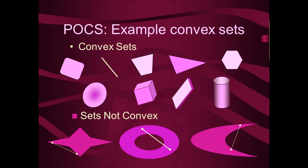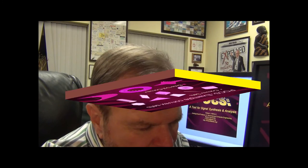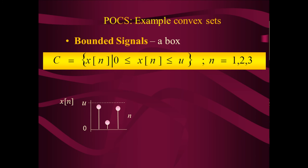Let's look at signals and how they might be interpreted as elements of a convex set. We start with a discrete signal with only three points — three points because we can plot it in three dimensions. We look at the set of signals x(n) such that the values of x(n) are bounded between a lower bound of 0 and an upper bound of U, for n = 1, 2, and 3. All three points are within the interval from 0 to U, so it is indeed a bounded signal.